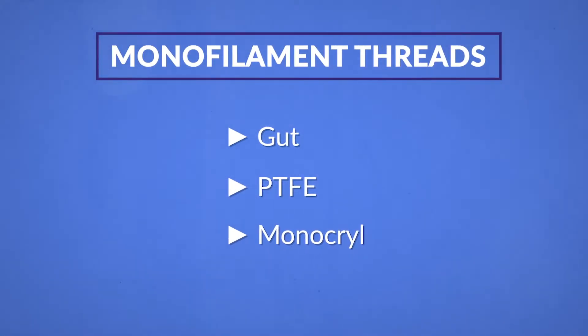Overall, monofilaments have less friction during knot run down, less resistance when you pull it through the tissue, and less debris or bacteria accumulation. You gain these advantages, but you do risk an increased chance of knot slippage, thus possible knot failure, so careful knotting is required. Gut, PTFE, and Monocryl are all monofilament threads. In contrast, multi-filament threads are braided. They are less slippery, therefore easier to handle intraoperatively and are less likely to come loose during healing.